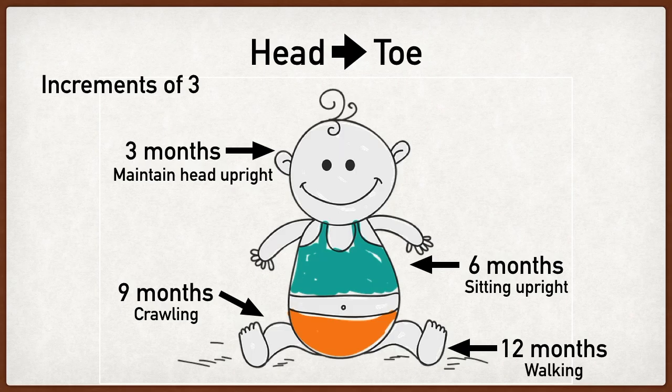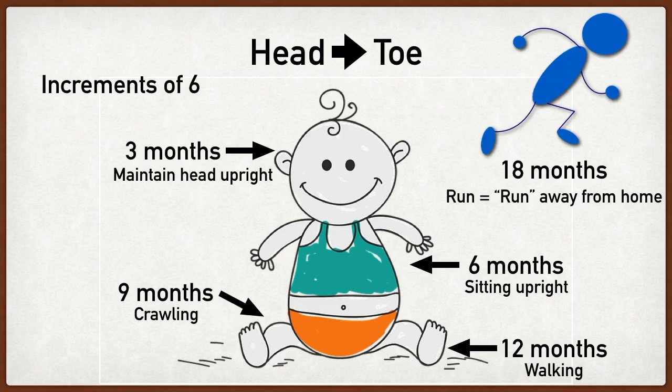So you're going to go by increments of three up through the first year of life, then double that and go by increments of six up to the next year of life. At 18 months, this is when running occurs. The way I like to think about this is when we're 18 years old, this is when we quote-unquote run away from home and go out into the real world. So 18 months is when running occurs.